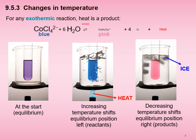Bond breaking occurs with the help of heat energy, while bond formation releases heat. In the forward reaction, fewer bonds are broken and more bonds are formed, so heat is released. Therefore, when the system favours the forward reaction by shifting its position of equilibrium to the right, some heat is recreated. At the new equilibrium, there are more pink hexa aqua cobalt(2+) ions and less blue tetrachlorocobaltate(2+) ions, and the Kc value is larger.